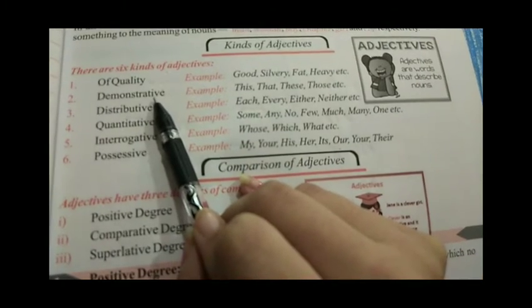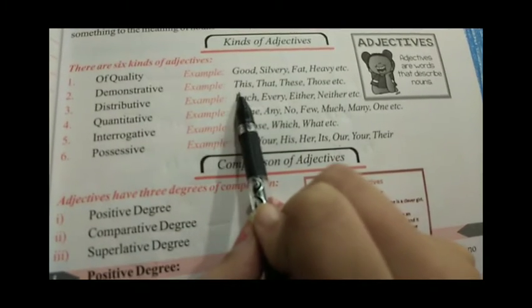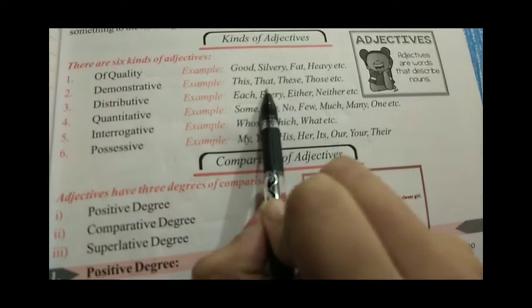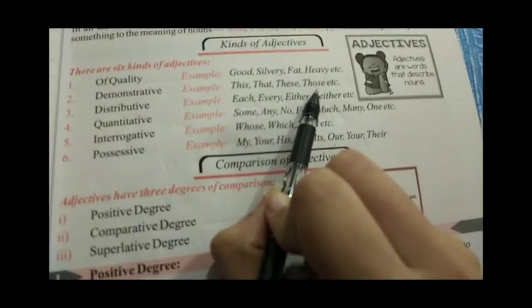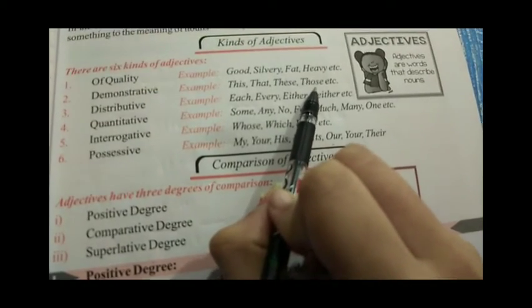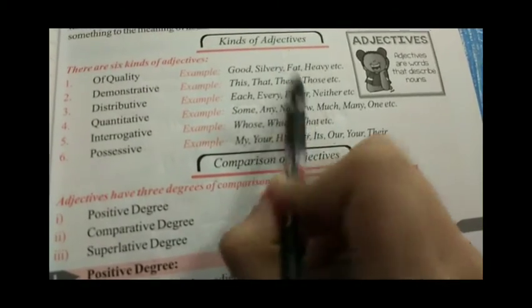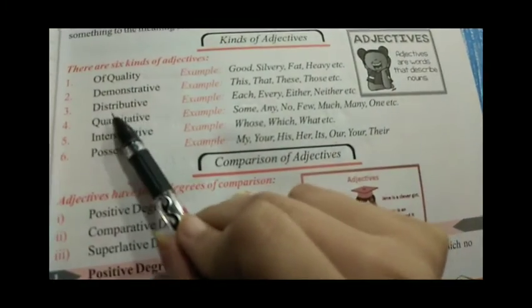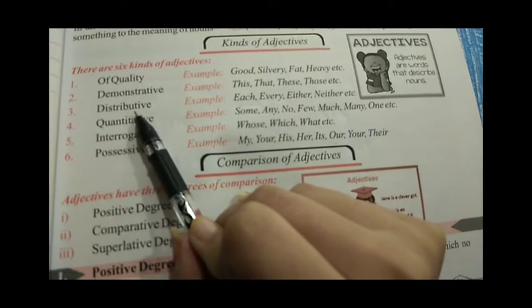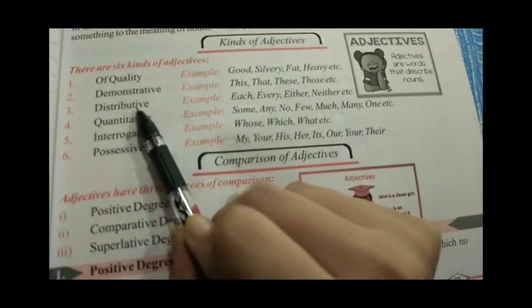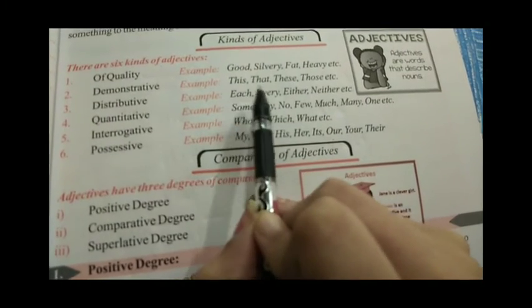The second is demonstrative adjective, which includes this, that, these, those. जब हम किसी चीज़ को point out करके बताते हैं — this, that — इस तरह। The third is distributive adjective, जिसमें आता है each, every, either, neither, etc.